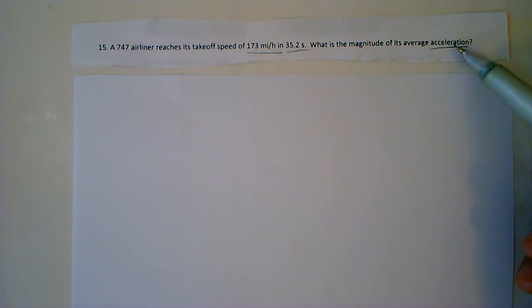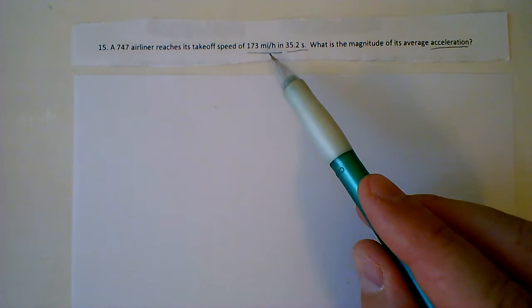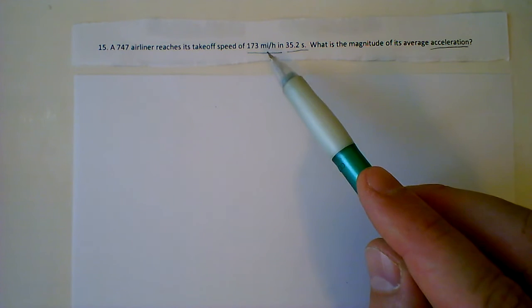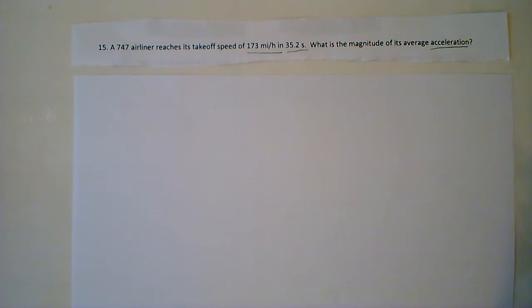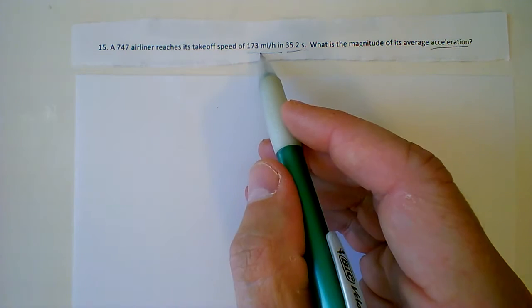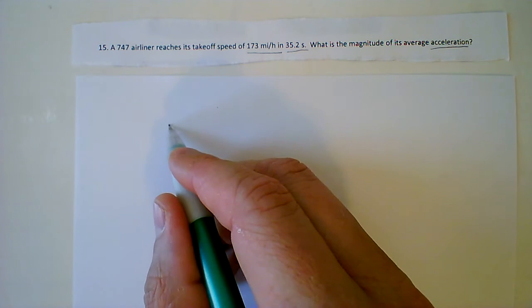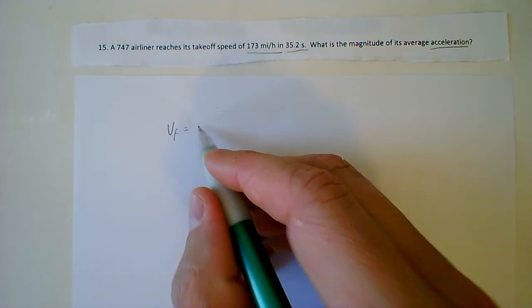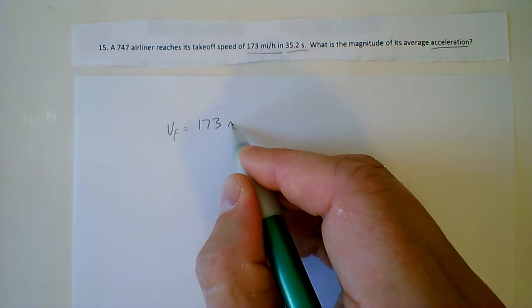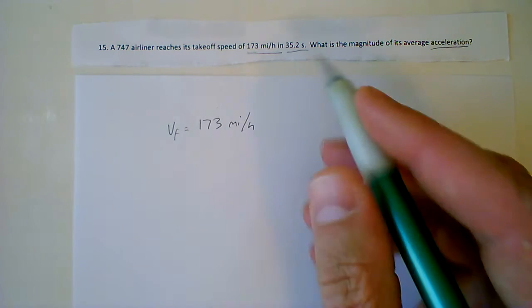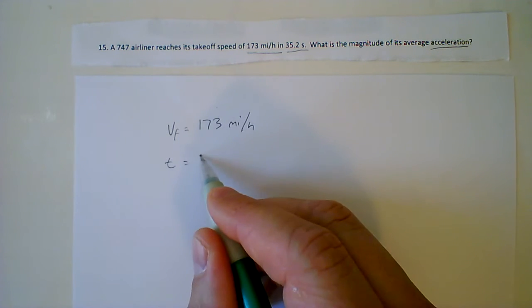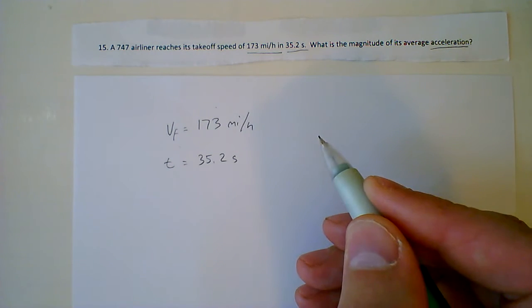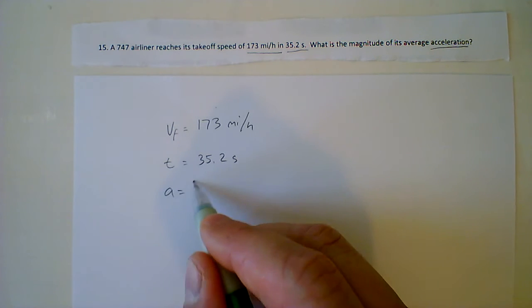This right here is the easiest way to see it, but the plane is going to be speeding up to this 173 miles per hour. So write down your givens. I see this given right here. That's going to be my vf because it's going to get to that speed. So 173 miles per hour and it's going to take 35.2 seconds to get there. It's asking you for acceleration.